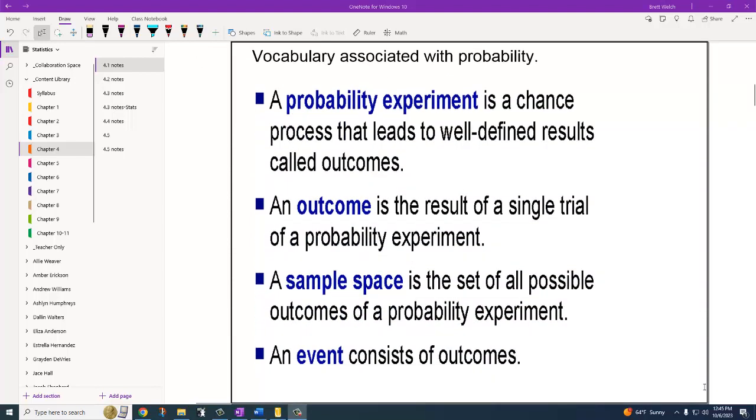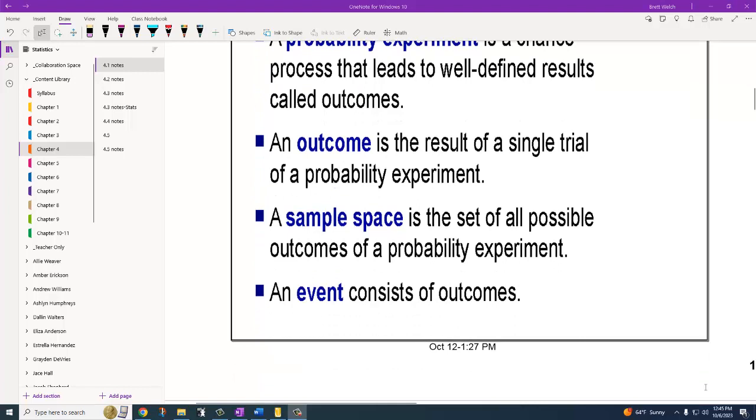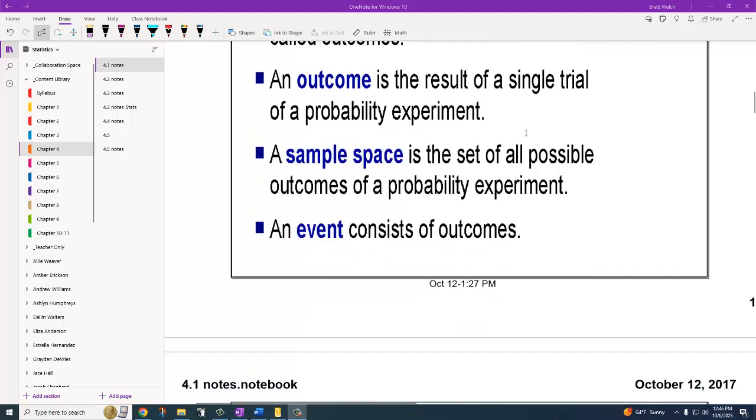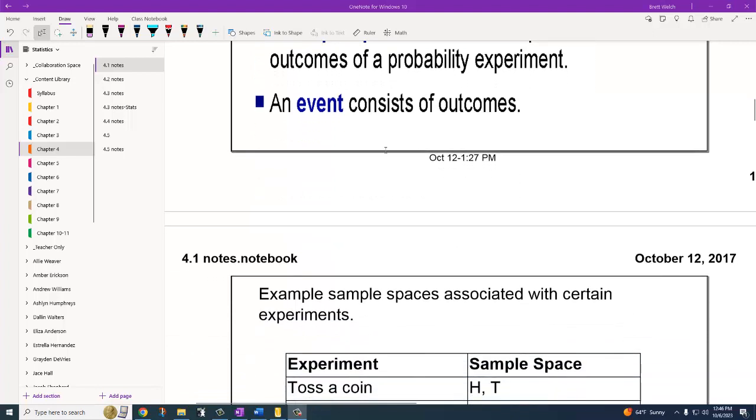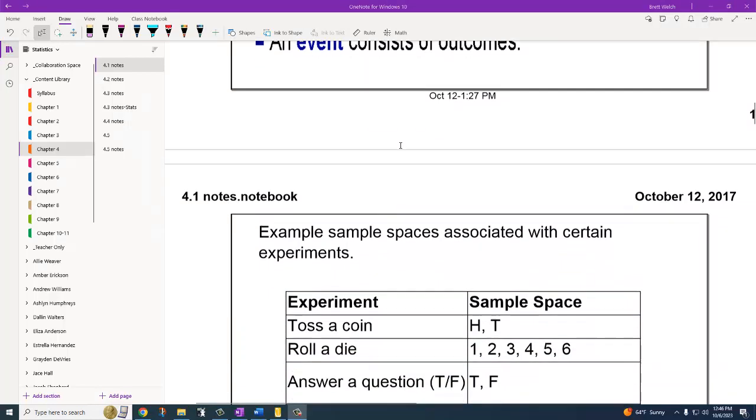A probability experiment is an experiment where it's a chance process that leads to well-defined results that we call outcomes. So flipping a coin, rolling a die, the weather tomorrow is a chance process. It's maybe it rains, maybe it doesn't, and it's going to have a definite result. So it did rain or it did not rain. An outcome is a result of a single trial of the probability experiment. A sample space is all the possible outcomes. You might have gotten heads when you flipped a coin, but tails would be considered part of the sample space. It's a possible option. And then an event consists of outcomes, so the probability of an event occurring would be the likelihood that those outcomes that were part of the event happened.